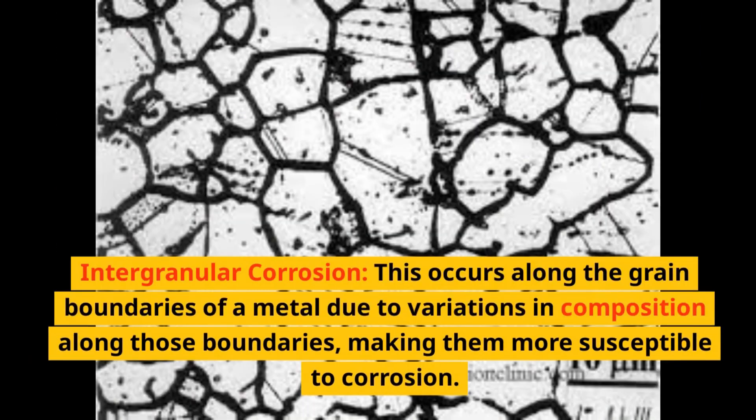Intergranular corrosion: this occurs along the grain boundaries of a metal due to variations in composition along those boundaries, making them more susceptible to corrosion.